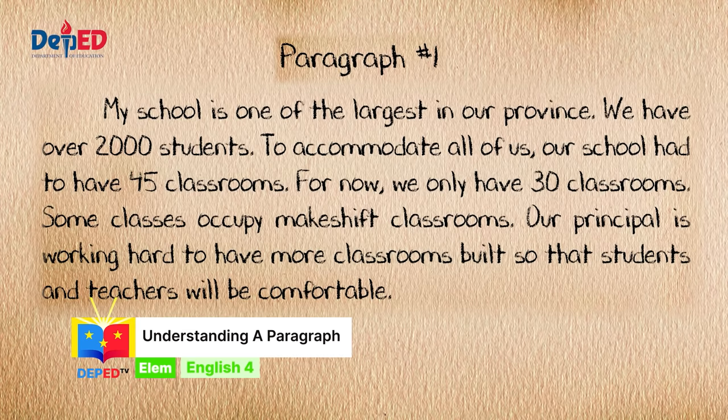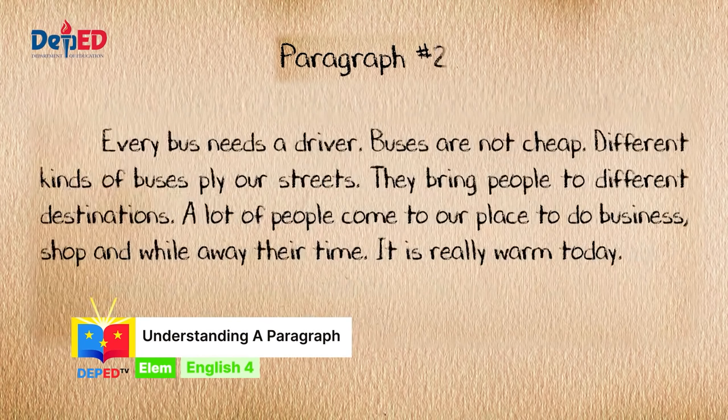Write a checkmark if the group of sentences is a paragraph and an X mark if it is not. Paragraph number one: My school is one of the largest in our province. We have over 2,000 students. To accommodate all of us, our school had to have 45 classrooms. For now, we only have 30 classrooms. Some classes occupy makeshift classrooms. Our principal is working hard to have more classrooms built so that students and teachers will be comfortable.